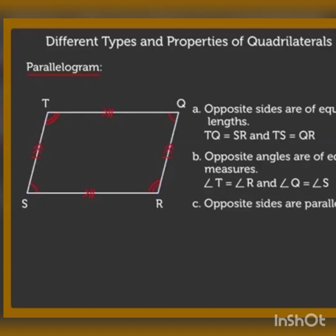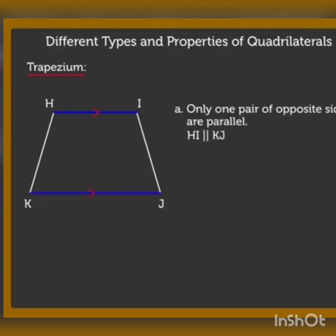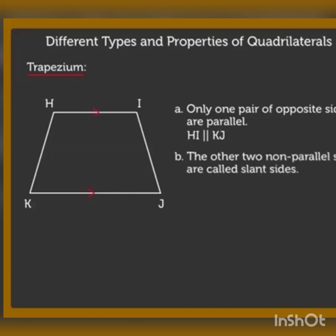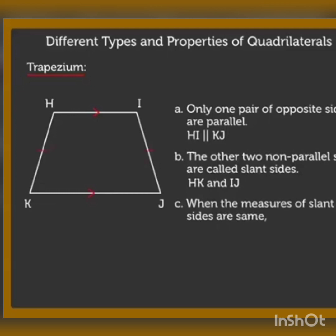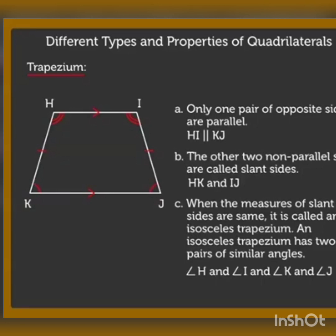Next comes trapezium. Here, only one pair of opposite sides are parallel — HI is parallel to KJ. The other two non-parallel sides are called slant sides: HK and IJ. When the measures of these slant sides are of equal length, such a trapezium is called an isosceles trapezium. An isosceles trapezium has two pairs of similar angles: HI and KJ.